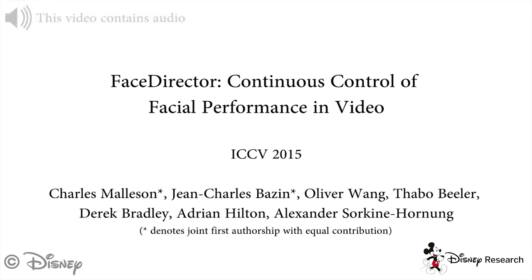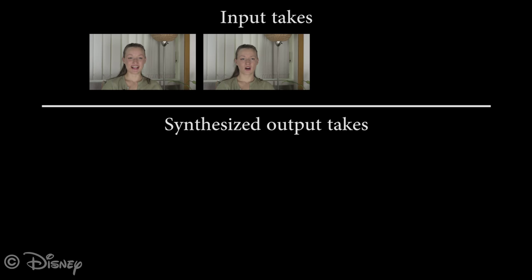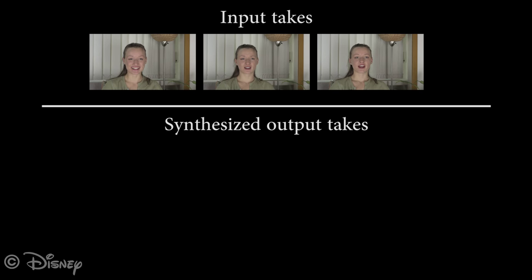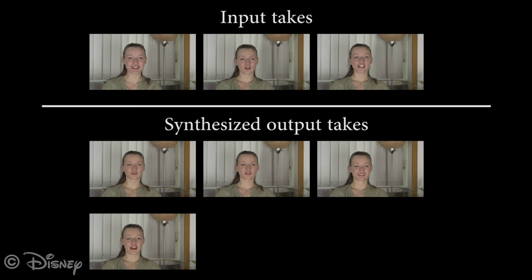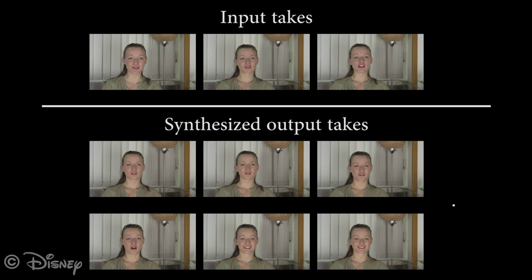We present a method for continuous control of facial performance in video. Given only a small number of input takes, such as the three shown here, a virtually limitless set of output performances can be generated using our method, allowing a director to achieve the perfect take in post-production.